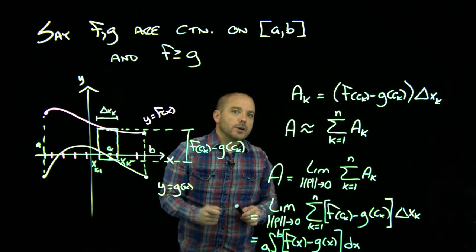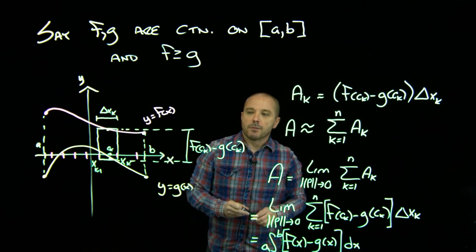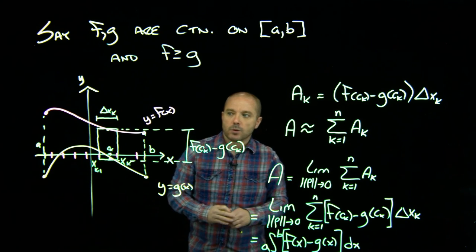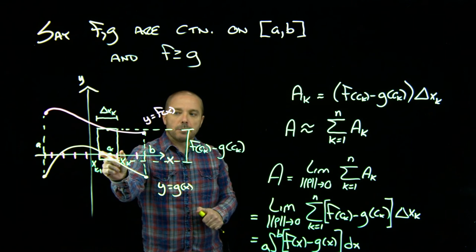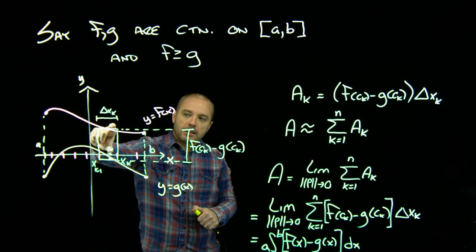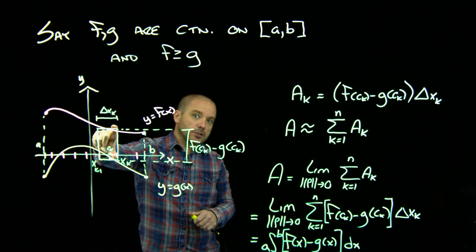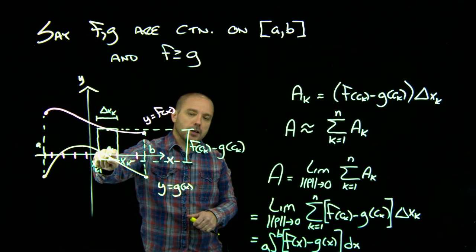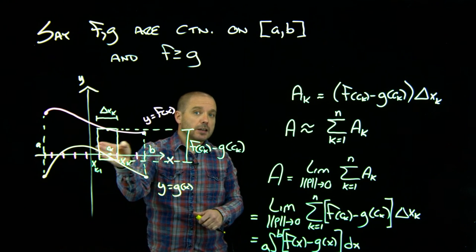Well, that's where the continuity up there comes in. Remember from calc one, we have this thing called the extreme value theorem. So we know that on this subinterval, there will be a time when the difference in these two functions is maximum and when it's minimum. So depending on your c sub k, you could get everything in between there.